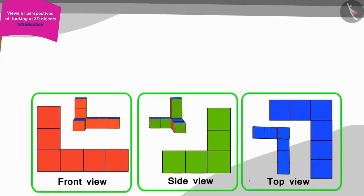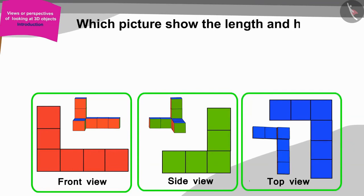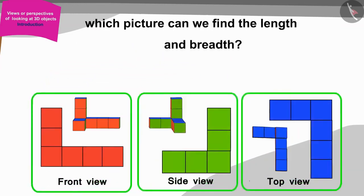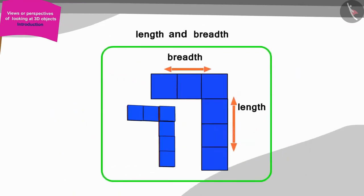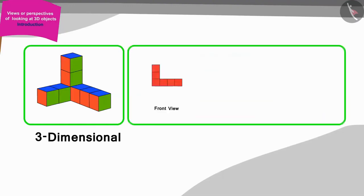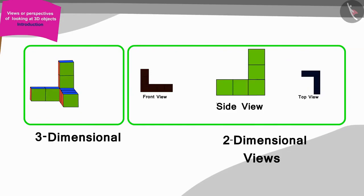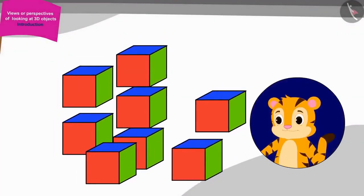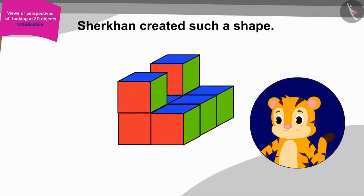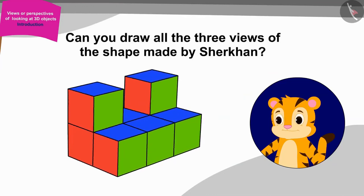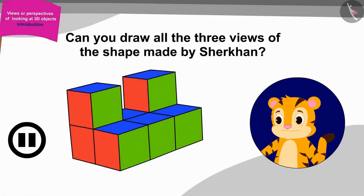Children, can you tell by looking at which picture you can find out the length and height of Golu's shape? That's correct — from the front view picture. And from which picture can we find the length and breadth? That's right — from the top view picture. In this way, we can make three-dimensional views of any shape: top view, front view, and side view. Now it was Sher Khan's turn to make shapes from the boxes. Can you draw all three views of the shape made by Sher Khan? You can stop the video and find the answer.